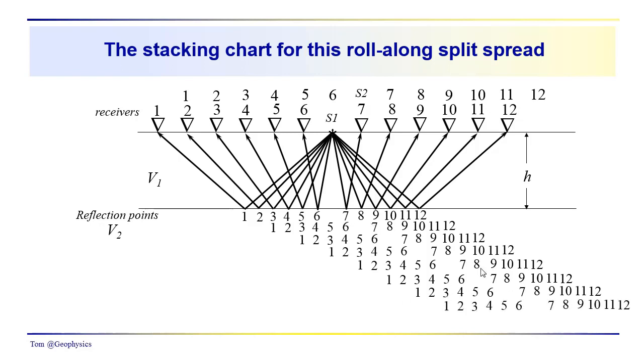And again, we just keep on going and you can see that this repetition continues. 11, 9, 7, 6, 4, 2, 12, 10, 8, 5, 3, 1, and so on. And these would be the basic combinations of receivers that are going to be giving you information from a common midpoint.